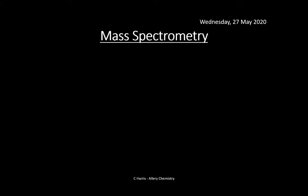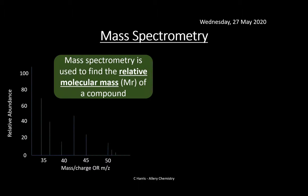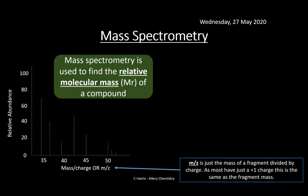We're going to start with mass spectrometry. Mass spectrometry is used to find the relative molecular mass, or MR, of a compound. On a mass spectrum graph, the x-axis is M/Z — mass to charge ratio — which represents the mass of a fragment. When a sample is pushed through a mass spectrometer it breaks into different fragments, each weighed. Most fragments have a charge of plus one, so the M/Z value is effectively the mass of the fragment or molecule being tested.